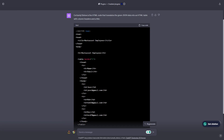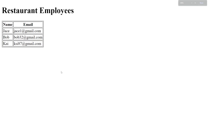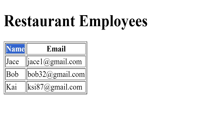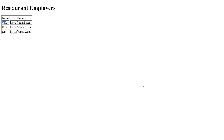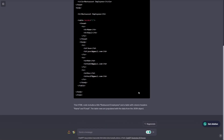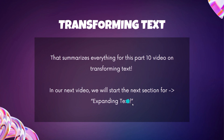Putting that HTML code into an actual web page, it has a title for restaurant employees and a table with columns for name, title, and email — showing Jace, Bob, and Kai with their respective emails. We could also ask ChatGPT to give us some CSS code to make the page look better. That summarizes the third prompt for format conversion. This wraps up part 10 on transforming text, and in our next video we're going to start the next section for expanding text.